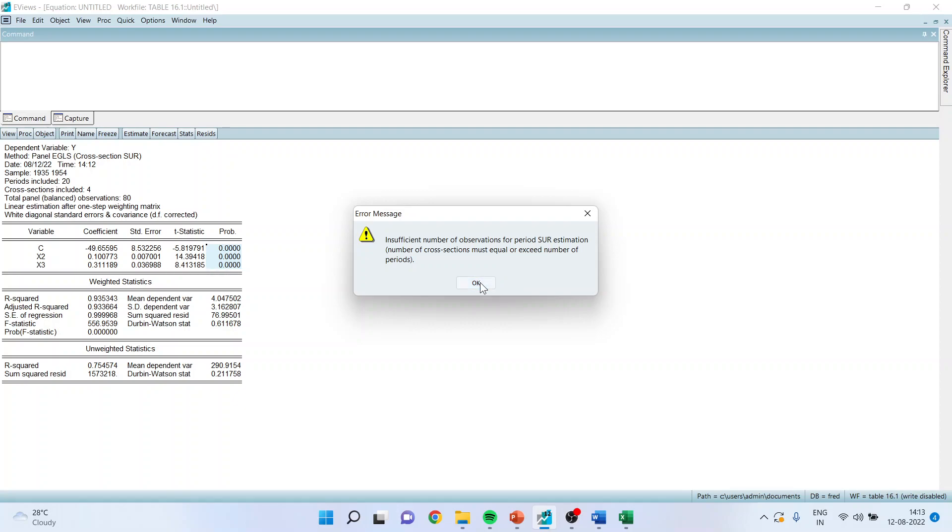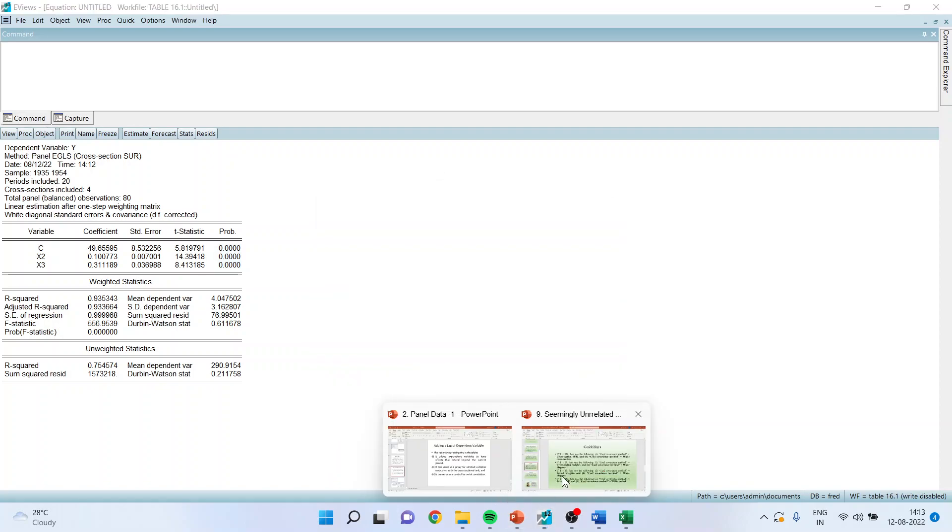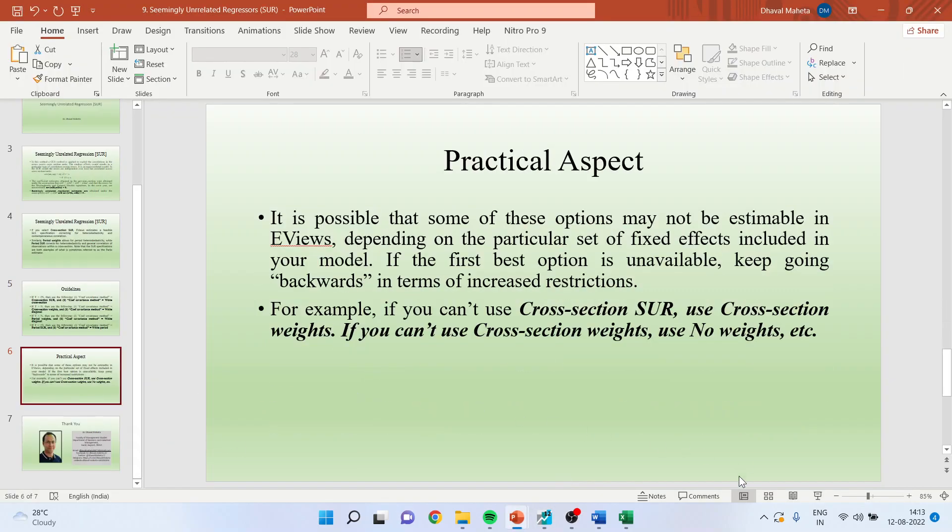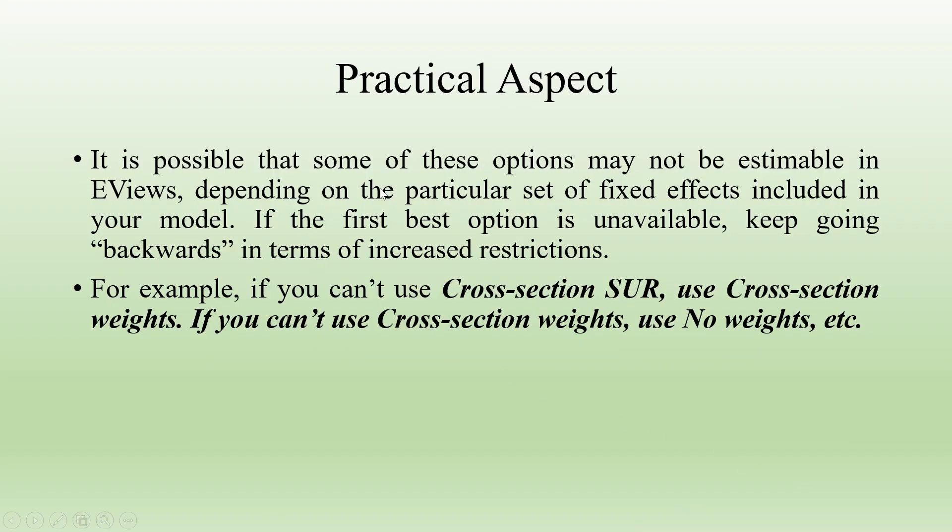Now in such scenario, which method to apply? So let us see a very practical aspect to this. It is possible that some of these options may not be estimable in eViews depending upon the particular set of fixed effects included in your model. If the first best option is available, if the first best option is unavailable, keep going backwards in terms of increased restriction.